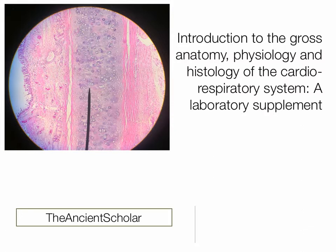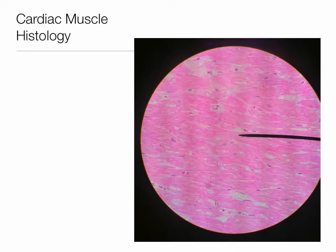I was able to get into the physiology lab at the college, make some slides, take some pictures, and they actually turned out really good. So I thought why not share these with you guys as well. This is just an introduction to gross anatomy, physiology, and histology of the cardiorespiratory system — a laboratory supplement. The first slide we have here is a slide of cardiac muscle, and we'll talk about some of the defining characteristics of cardiac muscle.